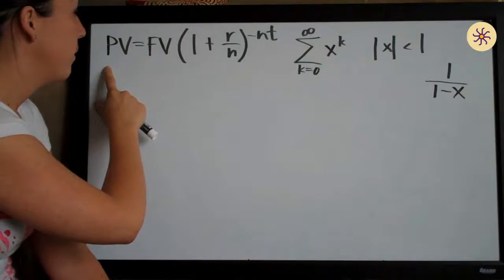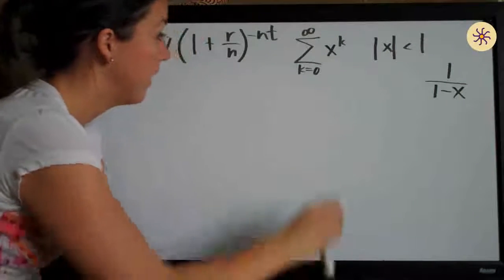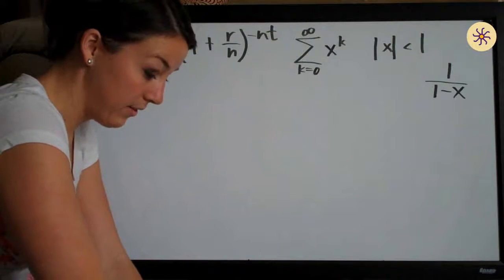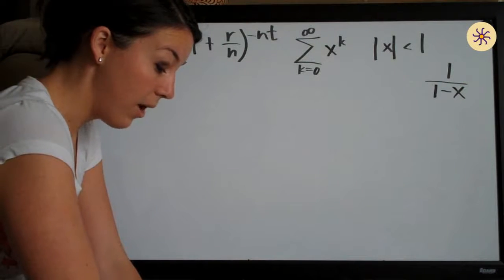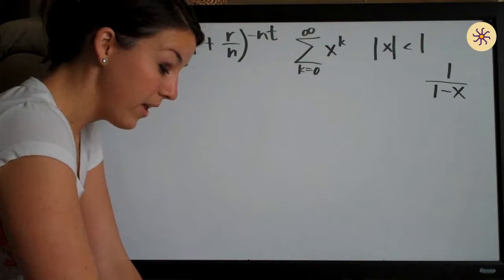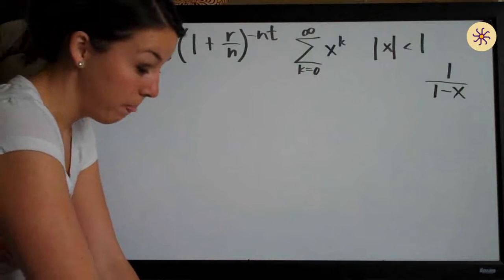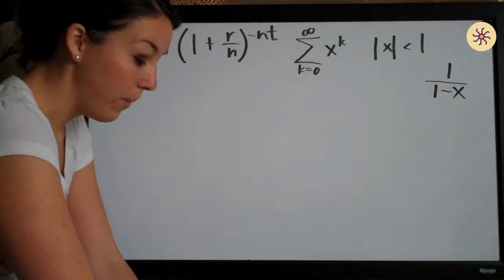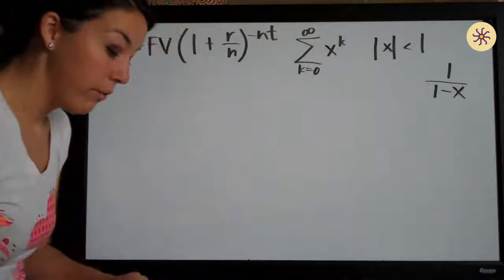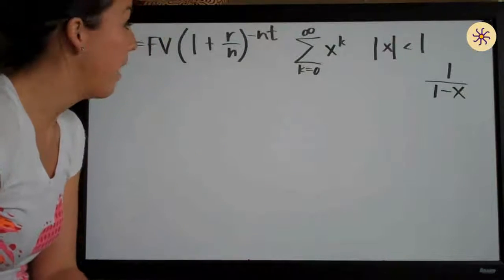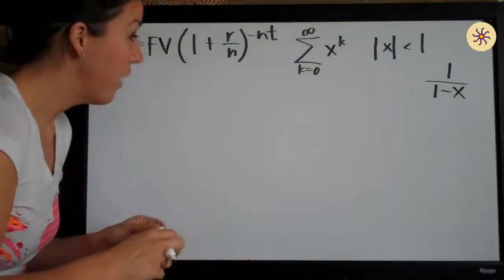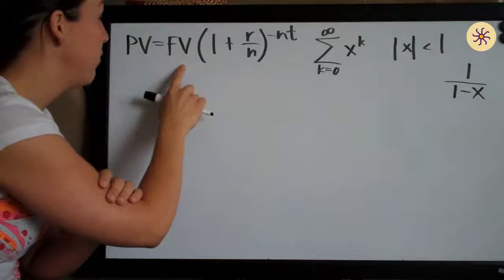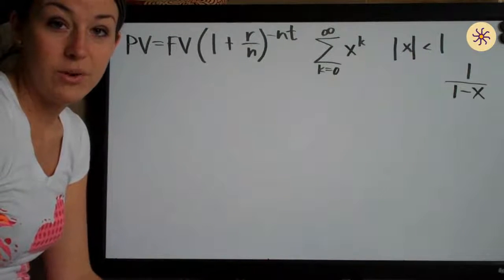I've written the formula for present value here on the board and also the formula that we use for infinite series. The question is: how much do we need to invest right now to establish a perpetual fund that pays $1,000 at the end of every year, if the account pays 5% annual interest compounded monthly and we never add to it?